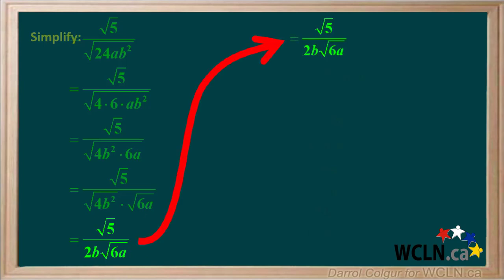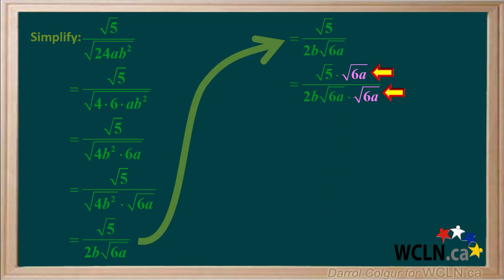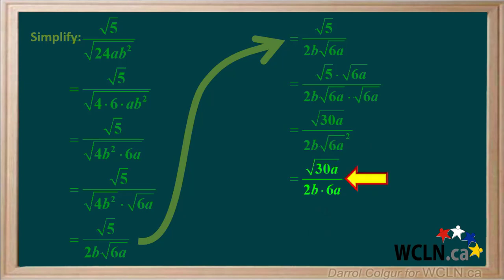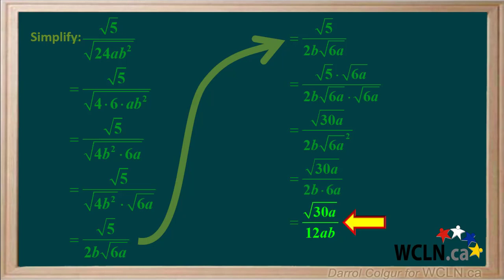Continuing the solution: there is still a radical in the denominator, so we rationalize by multiplying both numerator and denominator by the square root of 6a. In the numerator, the square root of 5 times the square root of 6a simplifies to the square root of 30a. In the denominator, the square root of 6a times the square root of 6a equals the square root of 6a squared, which is just 6a. So we're left with the square root of 30a over 2b times 6a. Simplifying 2b times 6a gives 12ab, so our final answer is the square root of 30a over 12ab. 30 cannot be factored into any perfect squares and there is no longer a radical in the denominator.